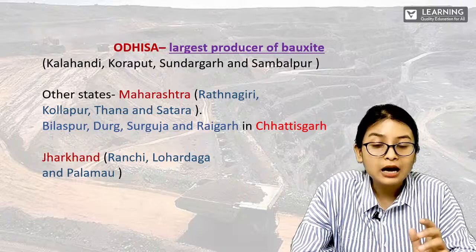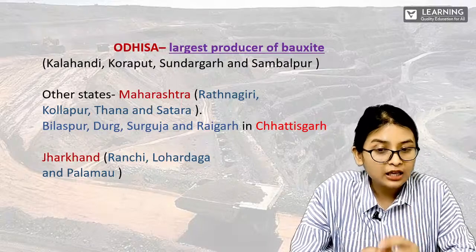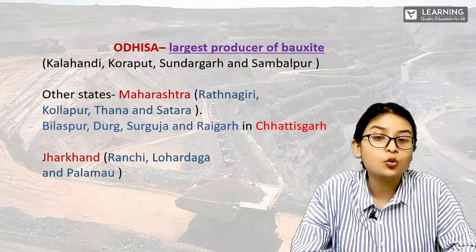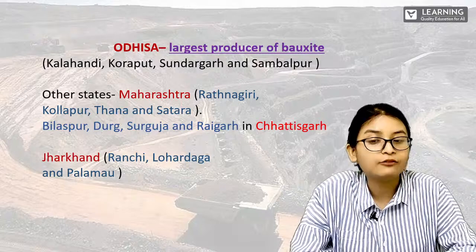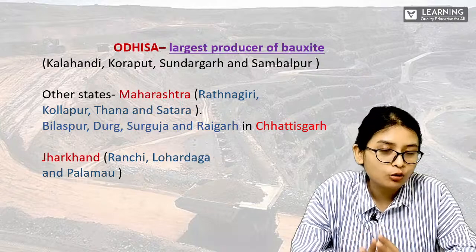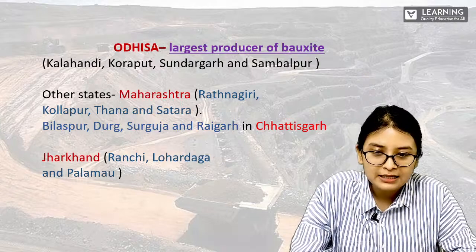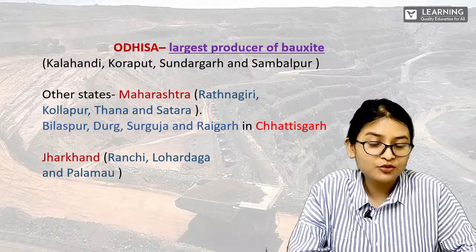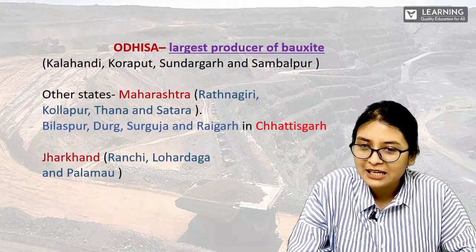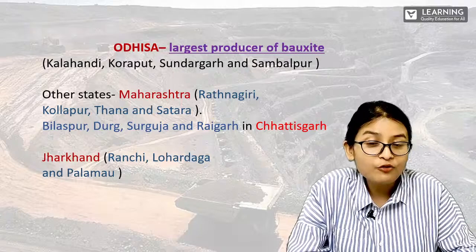The correct districts for the largest production of bauxite are: for Maharashtra, it is Ratnagiri, Kolhapur, Thana, and Satara; and for Chhattisgarh, it is Bilaspur, Turk, Surguja, and Raigarh. I have already uploaded the correct study note. I apologize for the mistake — mistakes can happen to anyone. Please accept my apology. Moving forward.